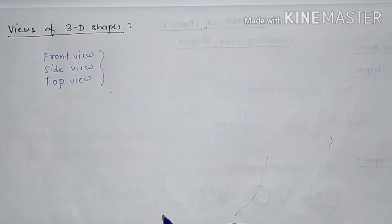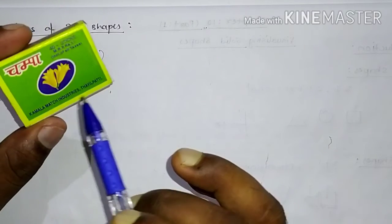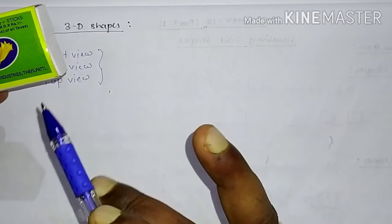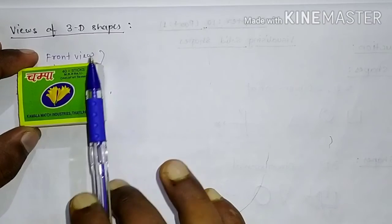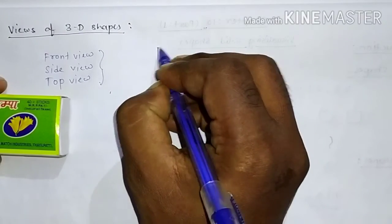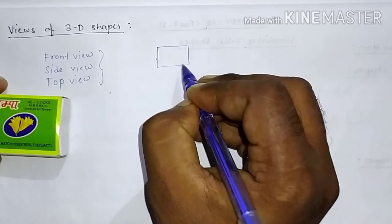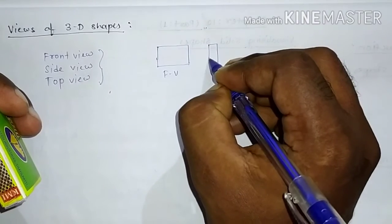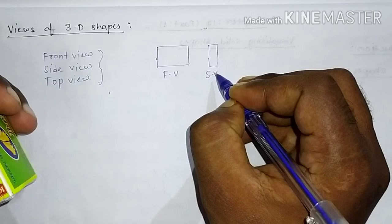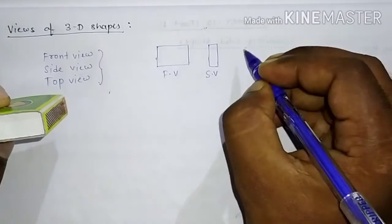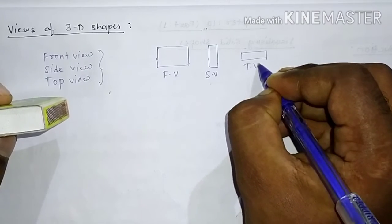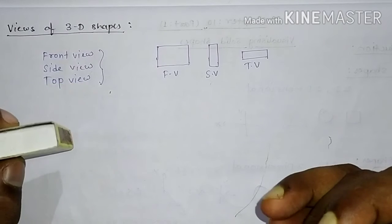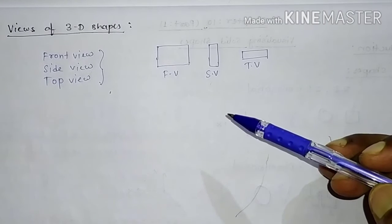Let's take an example — it's a 3D solid shape, a matchbox. We have to find which view is the front view, which is the side view, and which is the top view. If this is the front view, we draw it like this. This is the front view, this will be the side view, and this will be the top view. These questions appear in the next exercise, and this is the simple method to find views of solid shapes.